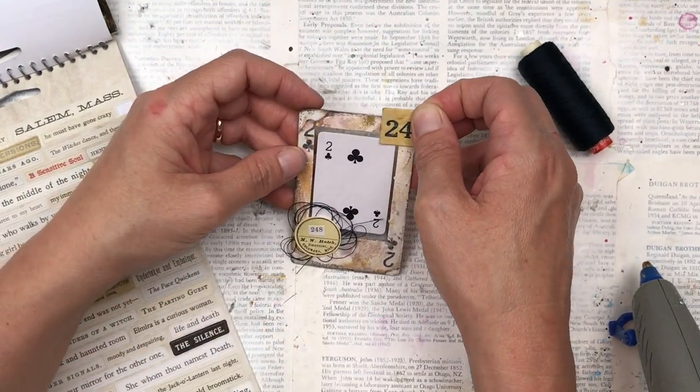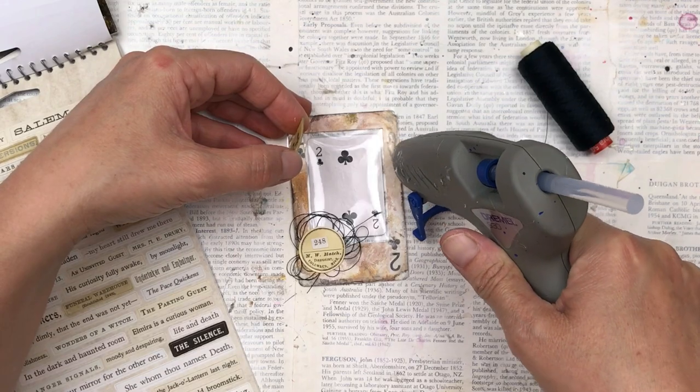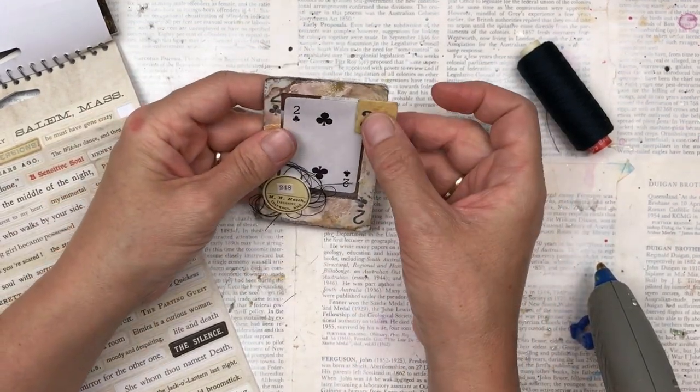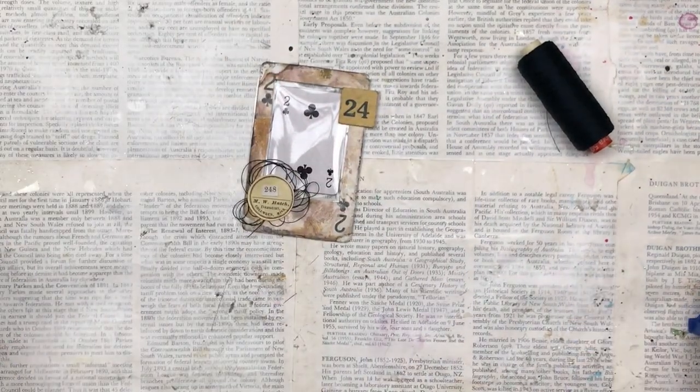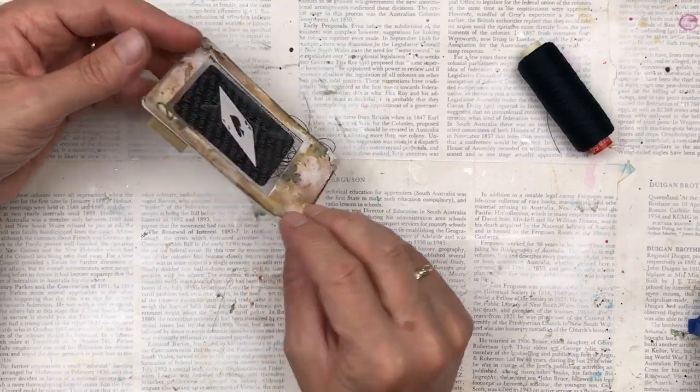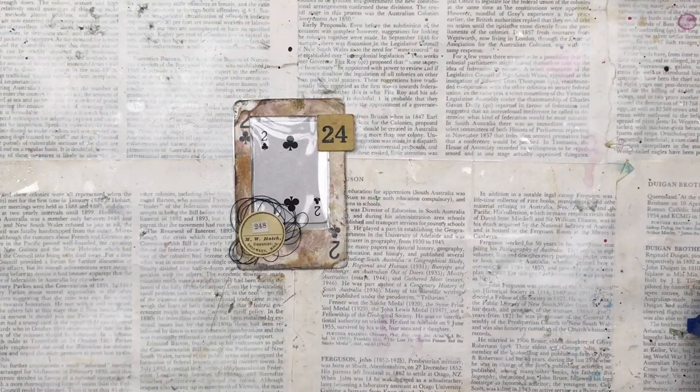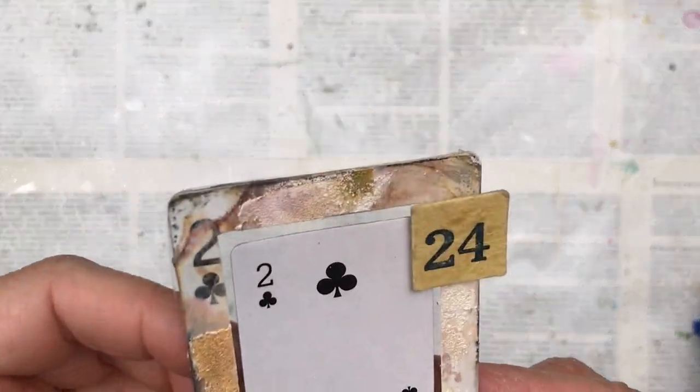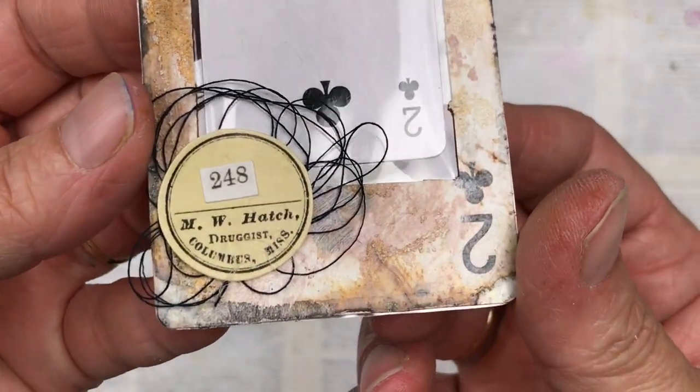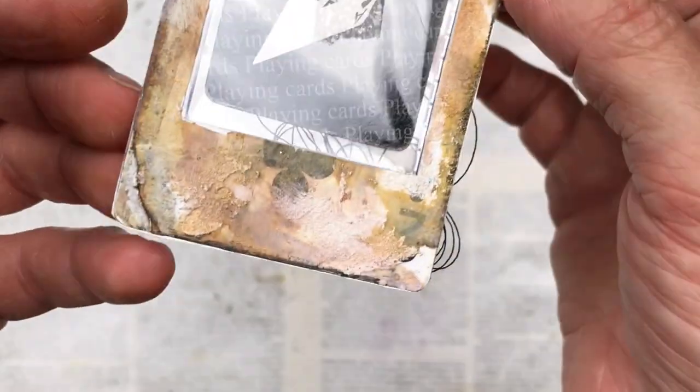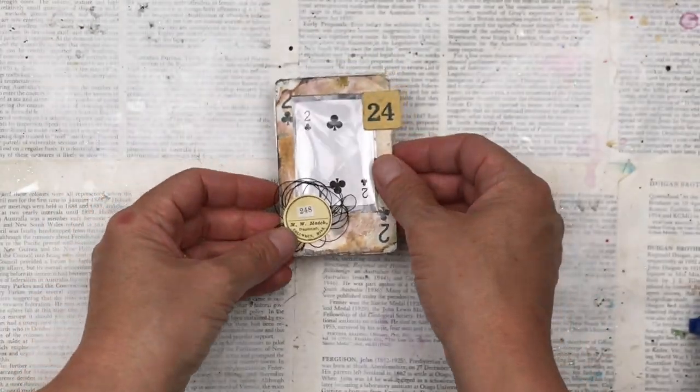Let me show you a close-up of the beautiful textures and colors of the background. As you can see, the grit paste makes different colors and tones, and I think it looks really rusty and grungy and old.